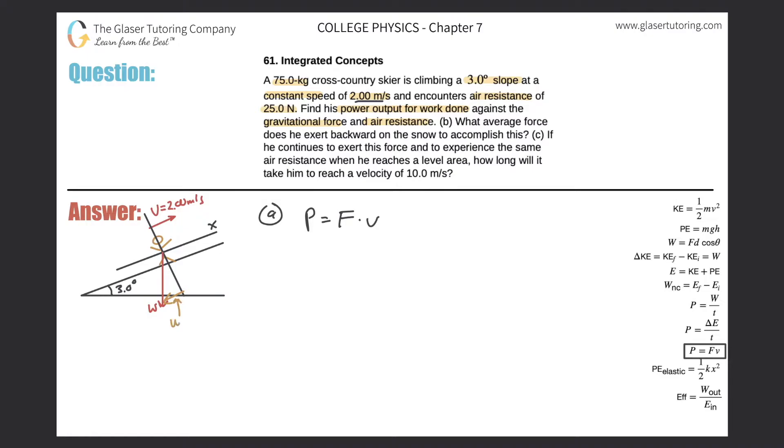And this component that I'm going to draw in yellow is the x component of that person's weight. And this x component of the weight is what would be opposing this velocity. So this is the important x component of the weight.